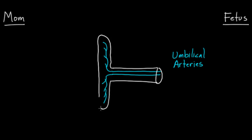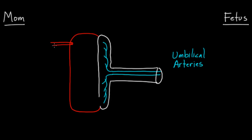This is our chorionic plate, and on the other side of the chorionic plate is a pool of blood — a pool of blood formed by mom. Mom actually has little arteries that head into this pool, and they literally open up into this pool of blood and release their blood.